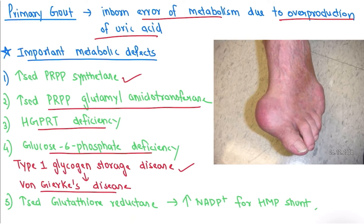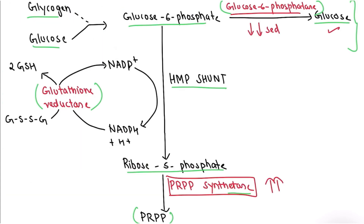The fifth cause is increased glutathione reductase activity. As seen in the pathway, glutathione reductase provides more NADPH for the HMP shunt, which leads to more production of ribose-5-phosphate. This ribose-5-phosphate drives more purine biosynthesis, which gets degraded to uric acid, and the excess uric acid is deposited in the joints, leading to gout.